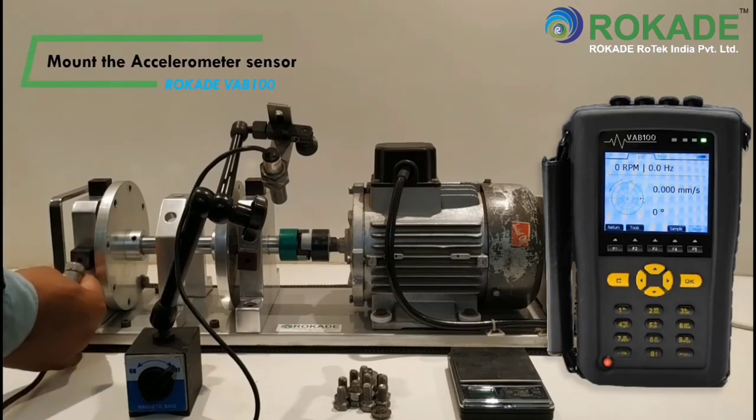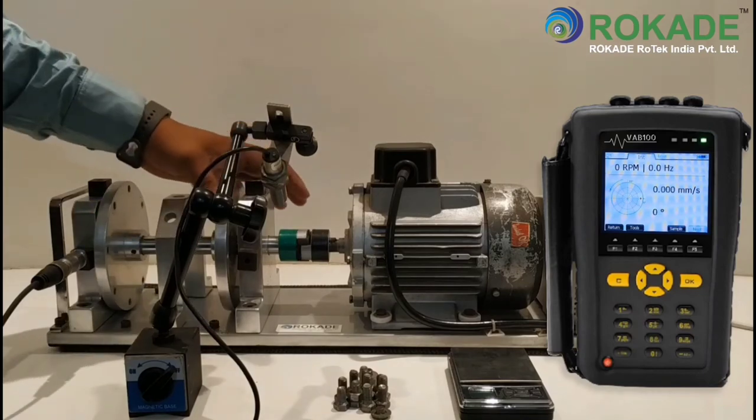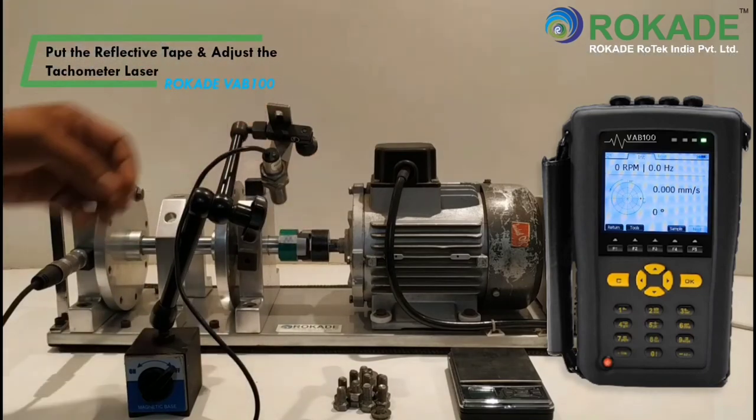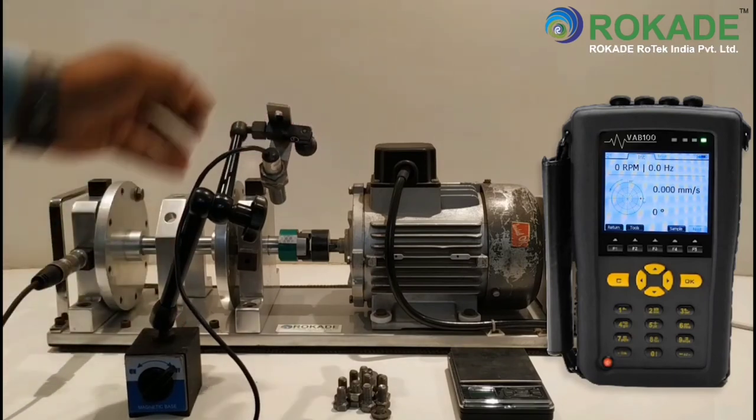Mount the accelerometer sensor on the bearing point. Put the reflective tape on the shaft exposed part, and now adjust the tachometer laser on the reflective tape for the measurement of RPM.